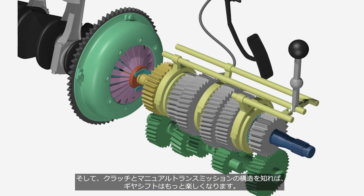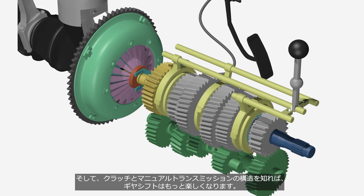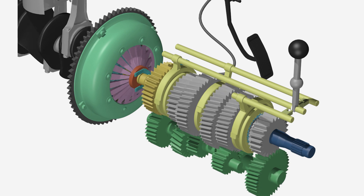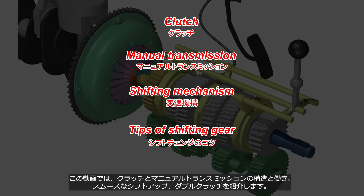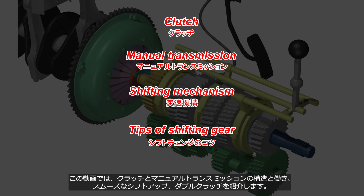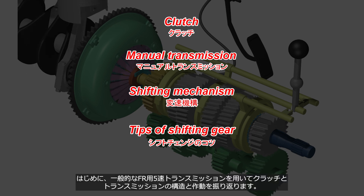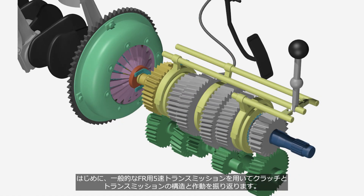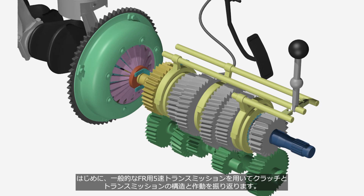If you understand the mechanism of the clutch and manual transmission, you can enjoy gear shifting even more. This video showcases the structure and function of the clutch and manual transmission, smooth upshifting, and double clutching — using a typical 5-speed transmission for front engine, rear wheel drive vehicles.